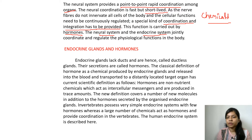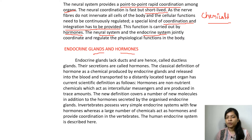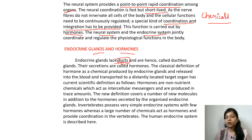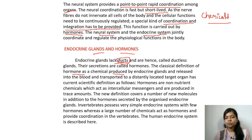The endocrine glands and their hormones: basically, glands which lack ducts — ductless glands — are known as endocrine glands. The classical definition according to NCERT states that hormones are chemicals produced by the endocrine glands.